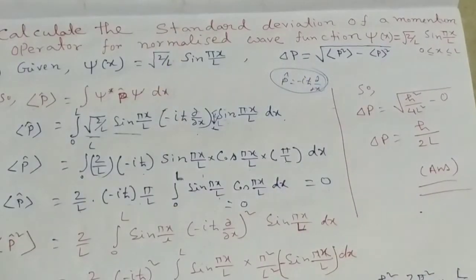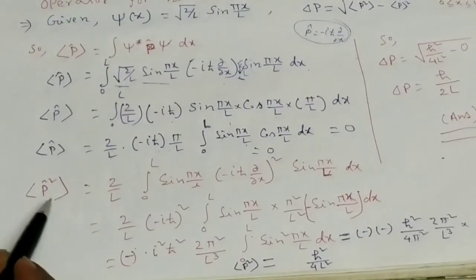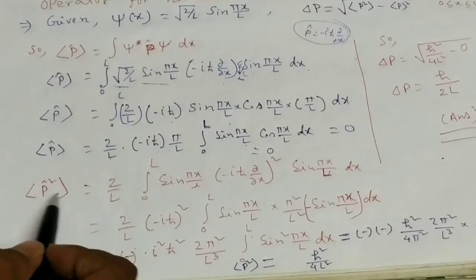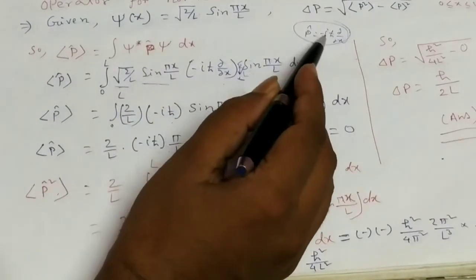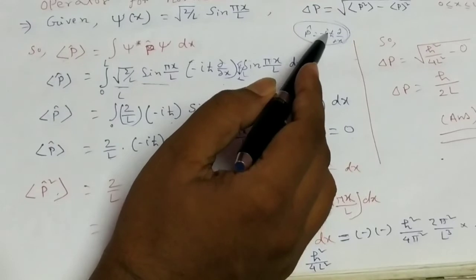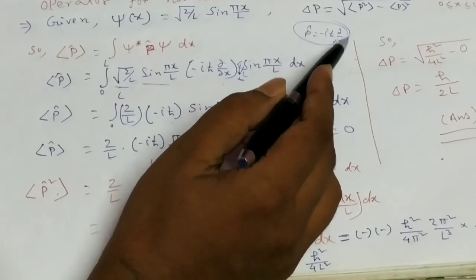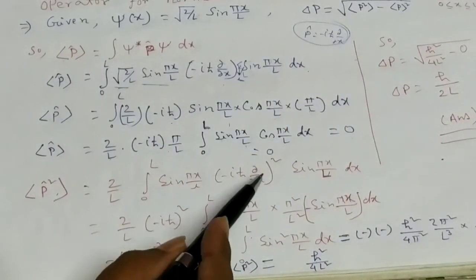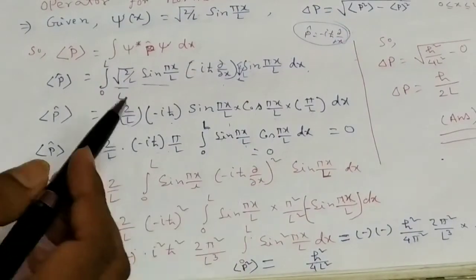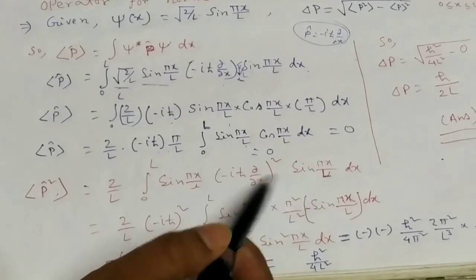Now we calculate the average value of p-squared. The momentum operator is p-hat equals minus i h-bar del over del-x, so p-hat squared equals minus i h-bar del over del-x, whole squared. Here we differentiate sine pi-x-over-l two times.